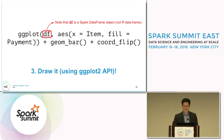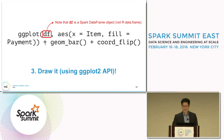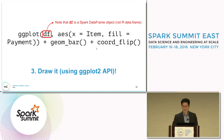It just takes the Spark data frame as input. In this case, it draws a flipped bar graph. As you can see, the API is exactly the same as that of ggplot2.